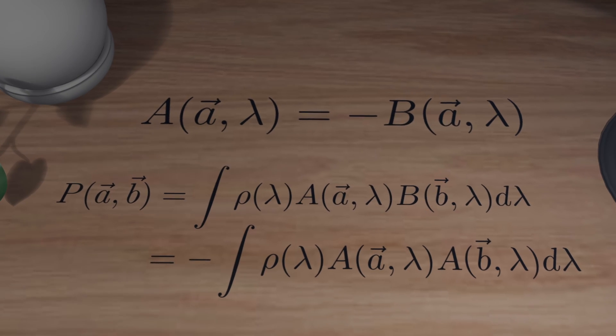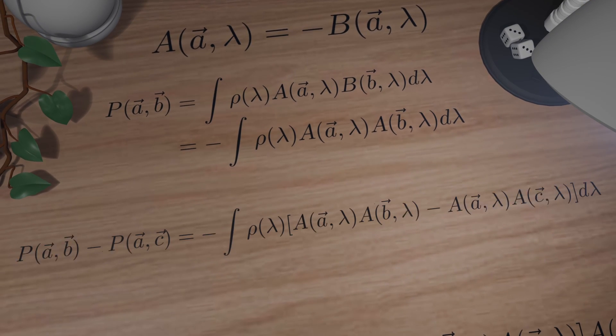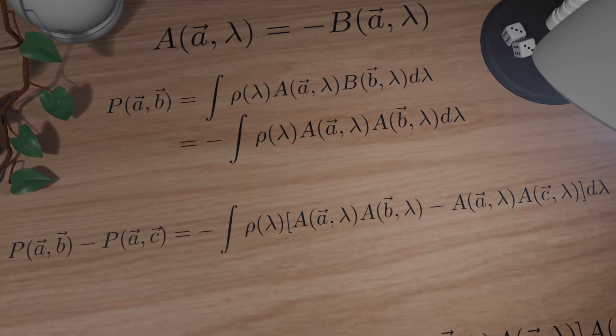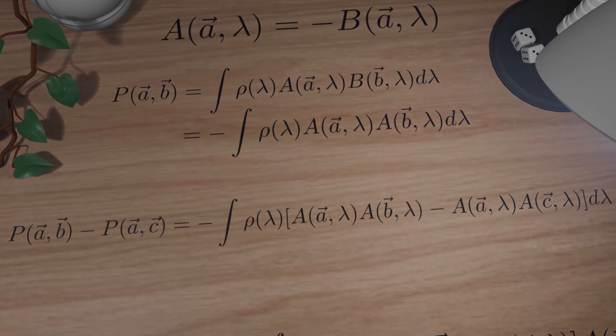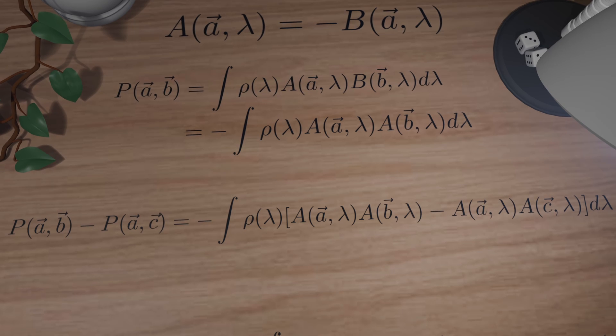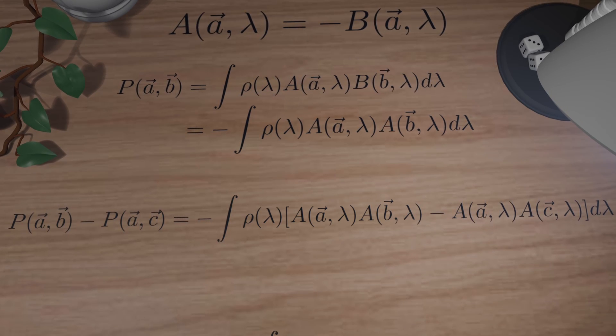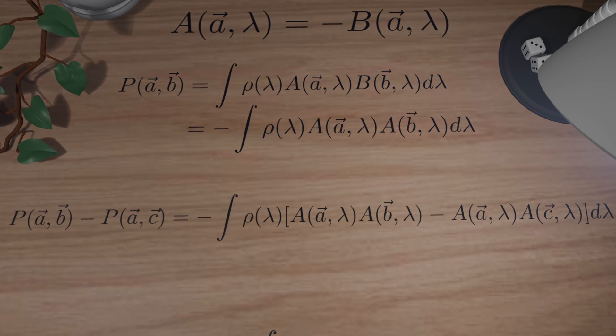If we now introduce a third unit vector C, which can point to some arbitrary direction, we can form the difference P of AB minus P of AC, where we just repeated the same logic from before. Now is also a great time to pause and go back if you don't understand any of the steps.